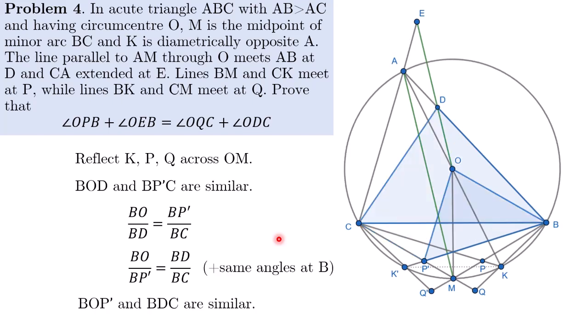And actually this shows that another pair of triangles are similar. So take a look at the ratios again. BO over BP' is equal to BD over BC. And at the same time, we saw that this tiny angle here is equal to this tiny angle. So when added the common angle here, we see that this angle at B is equal to the other angle at B.